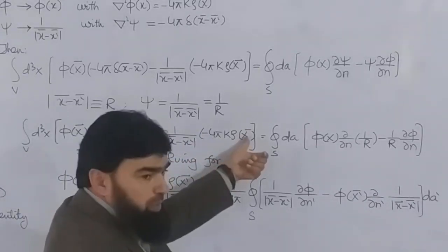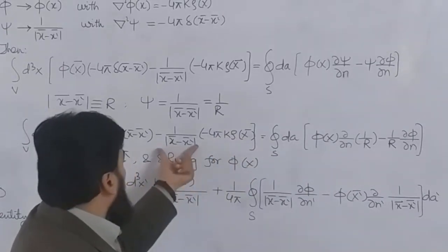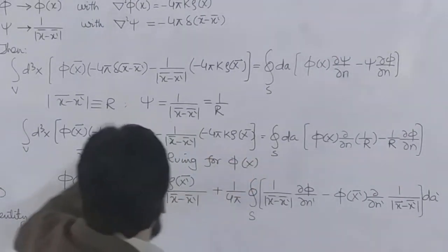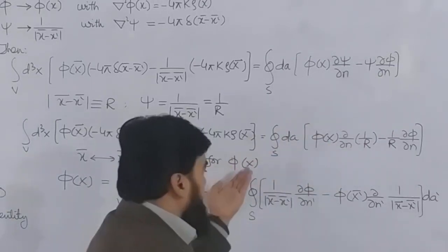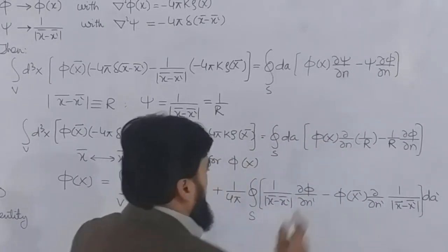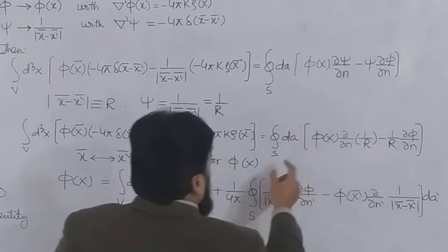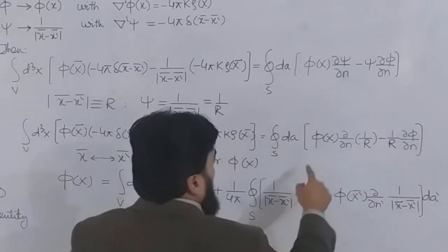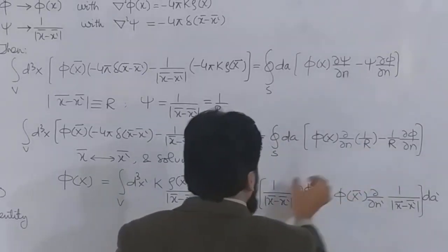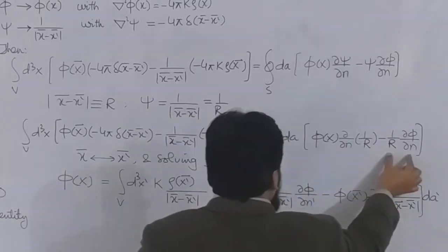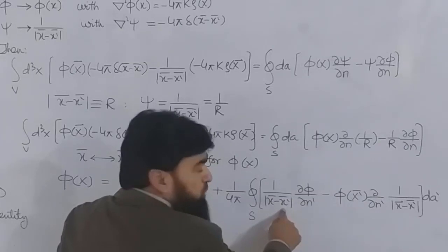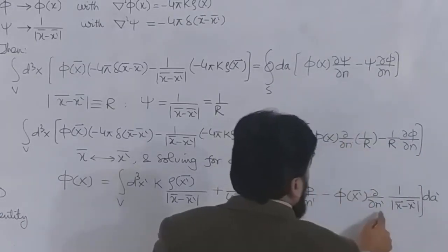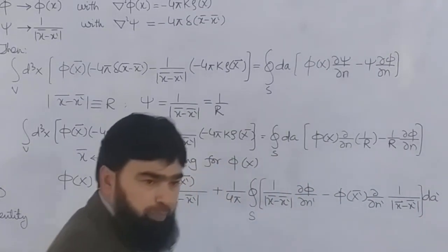The 4π cancels with the 4π already present in the second term, leaving k ρ(x')/|x − x'| for the volume part. For the surface terms, the 4π from the left side comes over as 1/4π, and because of a double minus the first surface term becomes positive: (1/|x − x'|) ∂φ/∂n', then minus φ(x') ∂/∂n'(1/|x − x'|).